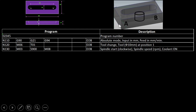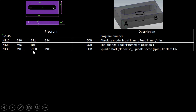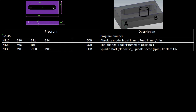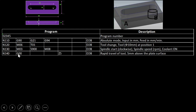M03 starts the spindle in the clockwise direction. The spindle speed is set to S900. In colleges and universities, a chart is provided to select spindle speed based on material, tool, and coolant conditions. M08 turns the coolant on. End of block.